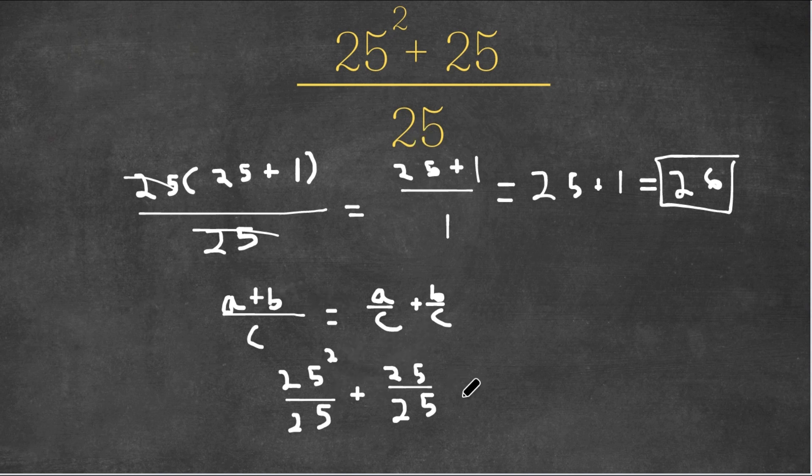Now as you can see, 25 squared over 25 is 25, plus 25 over 25 is 1, and this would equal 26. 25 plus 1 is 26.